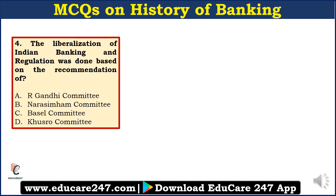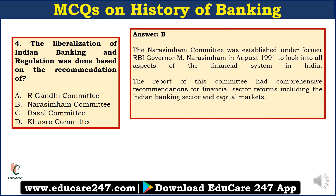Question number four: The liberalization of Indian banking and regulation was done based on the recommendation of — A. R. Gandhi Committee, B. Narasimham Committee, C. Basel Committee, or D. Khusro Committee. The answer is B — the Narasimham Committee. It was established under former RBI Governor M. Narasimham in August 1991 to look into all aspects of the financial system in India, with comprehensive recommendations for financial sector reforms including banking and capital markets.